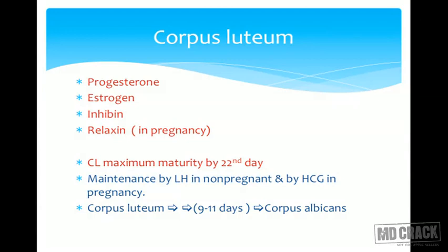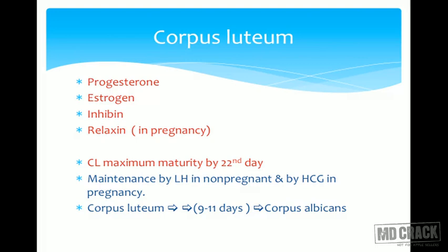The corpus luteum matures maximally by day 22 of a 28-day cycle — that is 7 to 9 days after ovulation, with day 9 being the peak of maturity. In a non-pregnant female, the corpus luteum is maintained by LH levels. If the female conceives, corpus luteum maintenance is by hCG, and it keeps secreting progesterone until the placenta takes over at around 12 to 14 weeks.